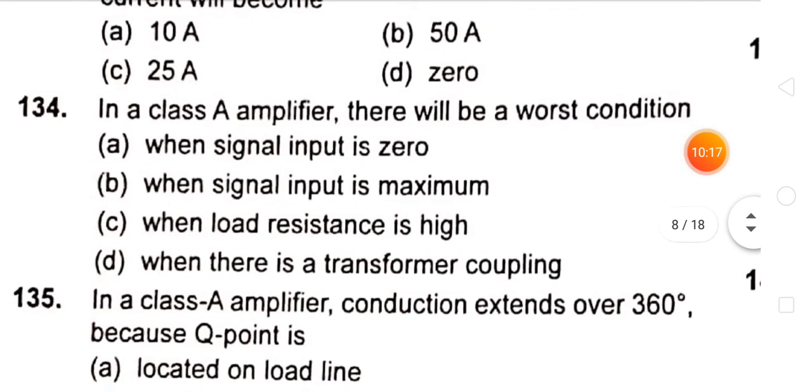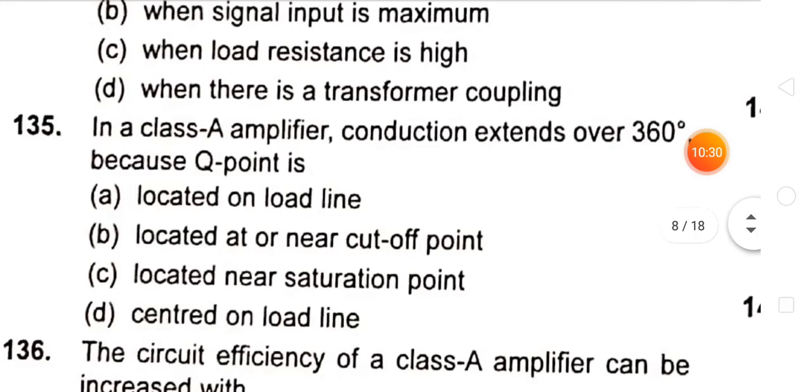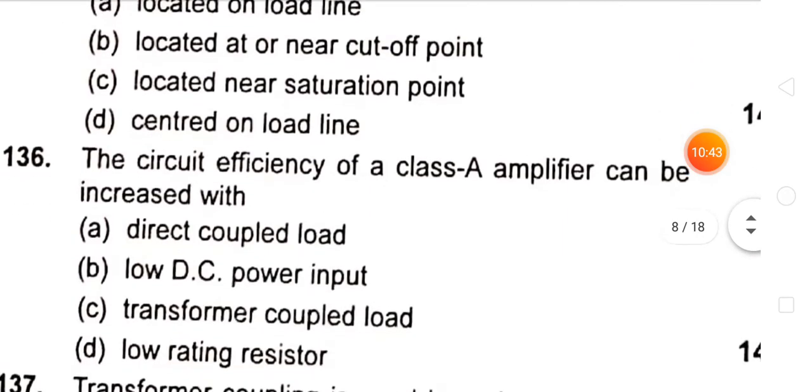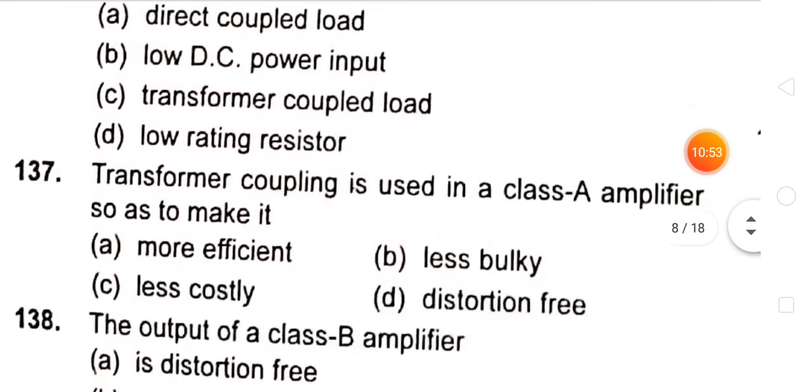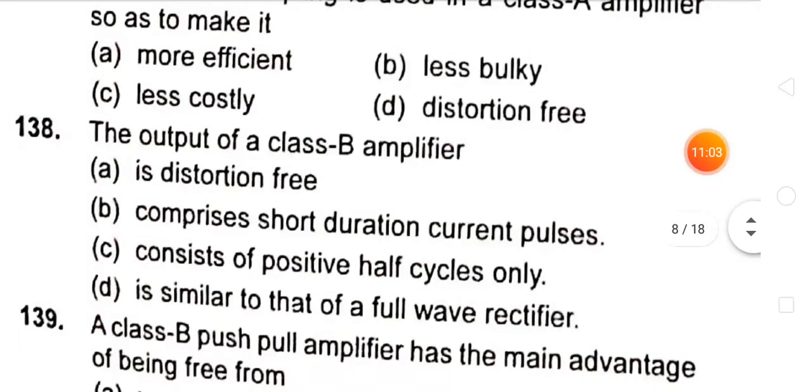In a class A amplifier, there will be a worst condition when signal input is zero. In a class A amplifier, conduction extends over 360 degrees because Q point is centered on load line. The circuit efficiency of a class A amplifier can be increased with transformer coupling. Transformer coupling is used in a class A amplifier so as to make it more efficient.